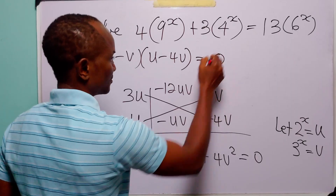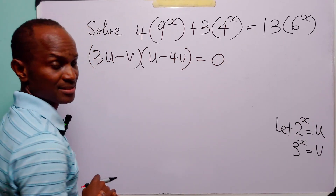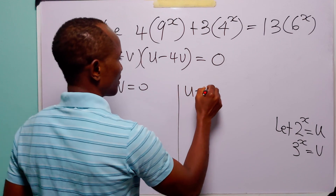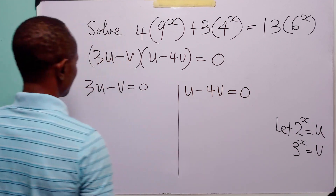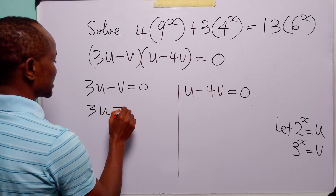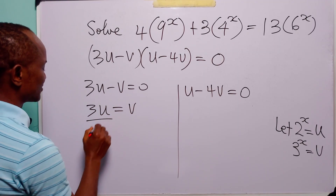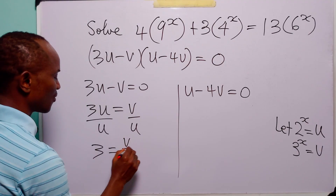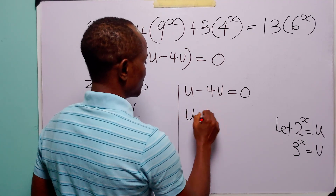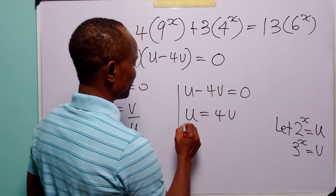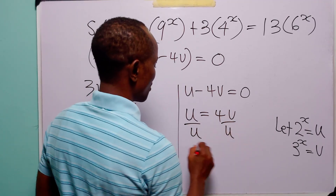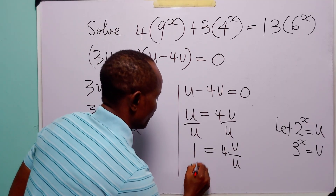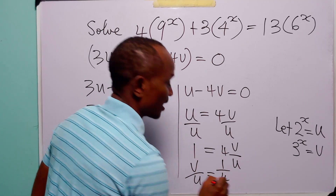And of course this is equal to 0. When we have a statement like this, it means either 3u minus v equals 0, or u minus 4v equals 0. From the first, 3u equals v, so v over u equals 3. From the second, u equals 4v, and dividing both sides by u gives v over u equals 1 over 4.